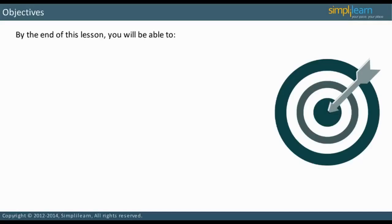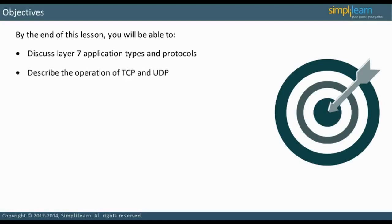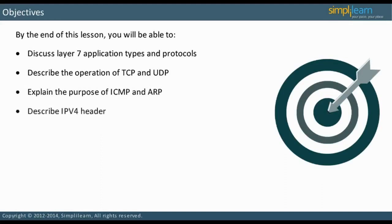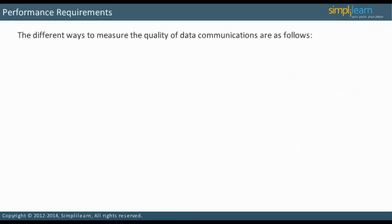By the end of this lesson, you will be able to discuss layer 7 application types and protocols, describe the operation of TCP and UDP, explain the purpose of ICMP and ARP, and describe the IPv4 header. Let us begin with the three types of layer 7 application in the next slide.